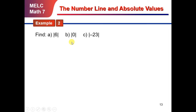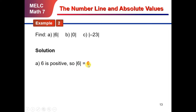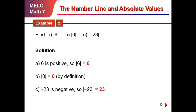Let's go to example number 2: find the absolute value of 6, the absolute value of 0, and the absolute value of negative 23. For the absolute value of 6: 6 is positive, so the absolute value of 6 is equal to 6. For the absolute value of 0: by definition, if the number inside the absolute value symbol is 0, then the value is 0. For the absolute value of negative 23: negative 23 is negative, however talking about absolute value we are just considering the size of the number, so the value is 23.